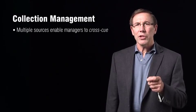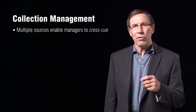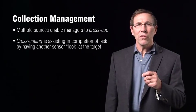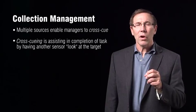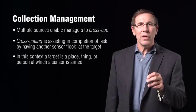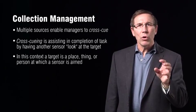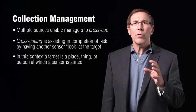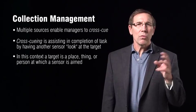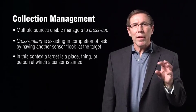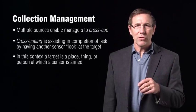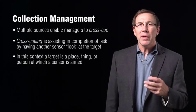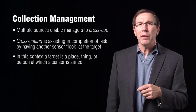Multiple collection sources enable collection managers to cross-queue between different sources. Cross-queuing is assisting in the completion of the collection task by having another sensor look at the target. In this case, a target is a place, a thing, or person at which the sensor is aimed. For example, one sensor may look at a target and find trees and foliage. Another sensor may reveal that the objects we think are green leaves are actually painted plastic, and the tree is camouflaging something. Once camouflage is determined, another sensor that will not be confused by the camouflage may investigate the object beneath the painted plastic tree.